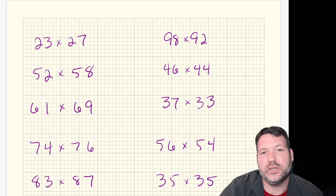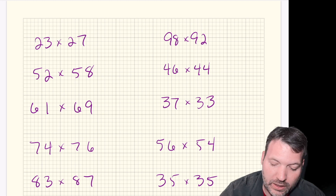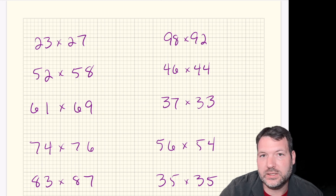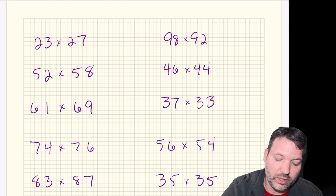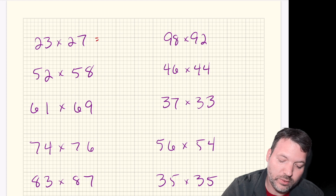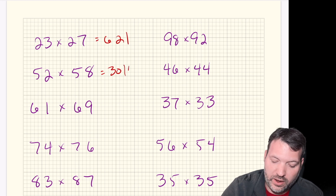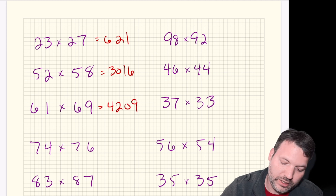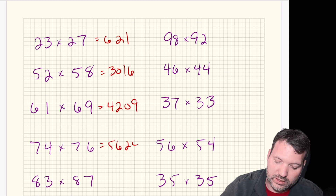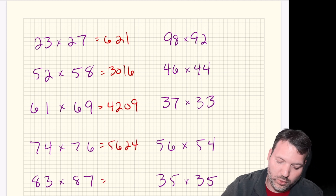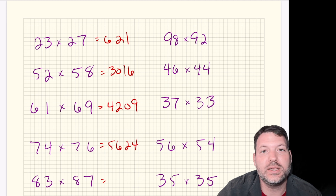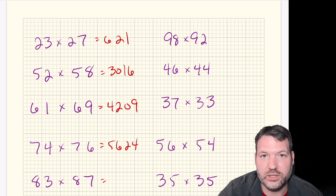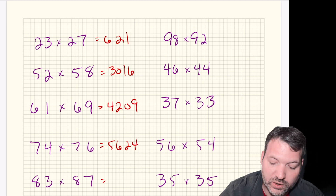We've got several examples here. Let's quickly multiply these and see if we can figure out what's going on. The answers are: 621, 3016, 4209, 5624. Let's pause here — what is it that I'm doing each time? What have you noticed?